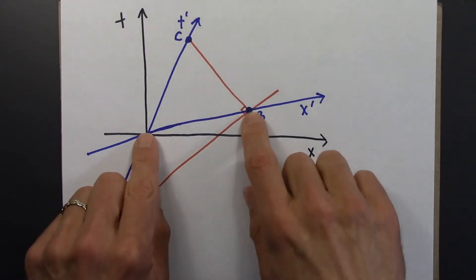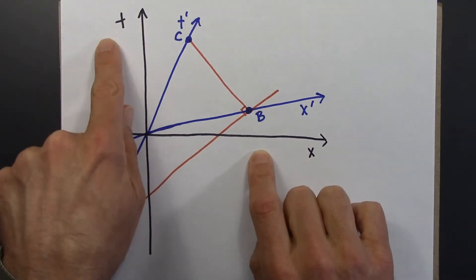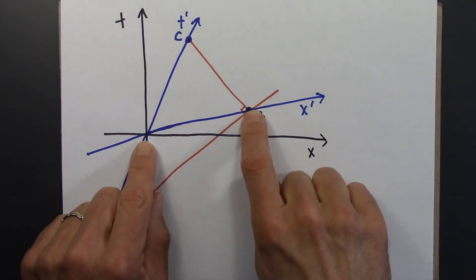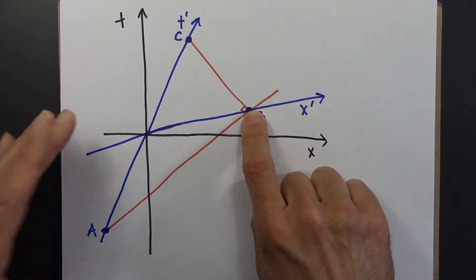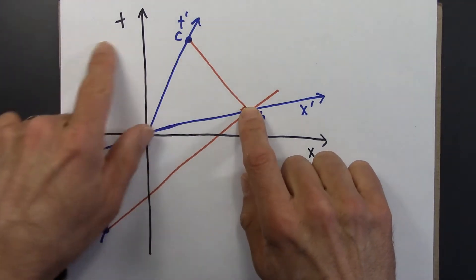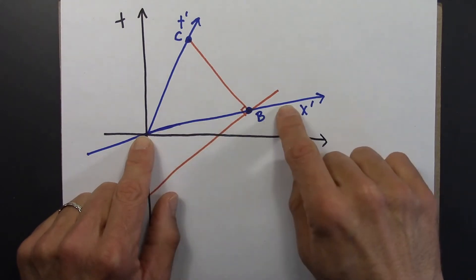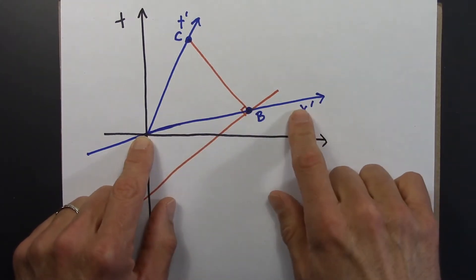And then when we tried to figure out where event B had to be on this diagram from Anna's point of view, we saw that it's up here. In this video, I'll make some more quantitative statements about the slope of this line and how to calibrate the x' axis.